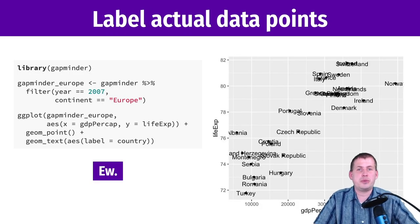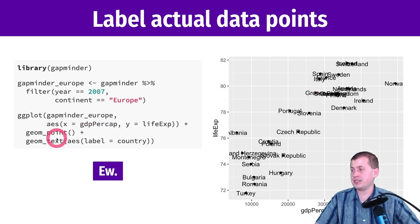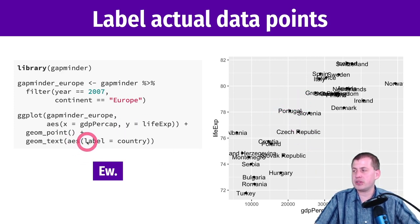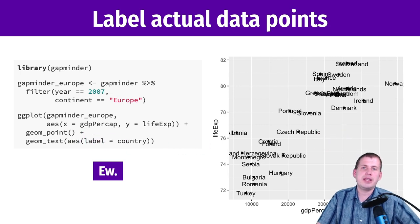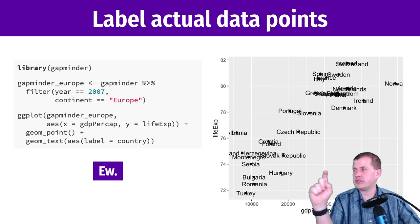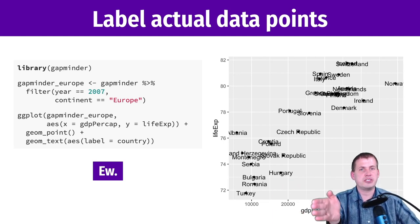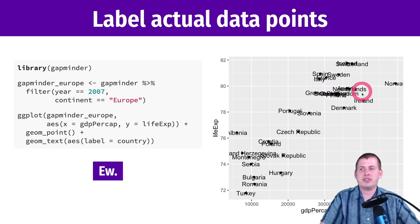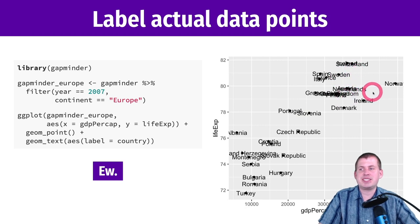To label actual data points, use geom_text. It needs an x aesthetic and a y aesthetic so it lines up with a point, but the key part is a separate new aesthetic called label, which comes from a column in the dataset. With Gapminder data — columns for year, country, GDP per capita, and life expectancy — mapping the country column to the label aesthetic will print that country's name directly onto the plot.